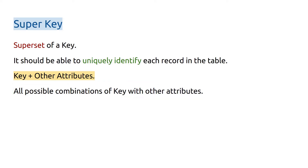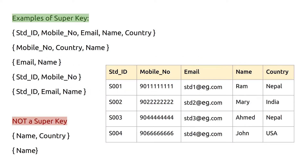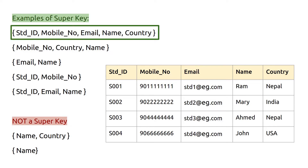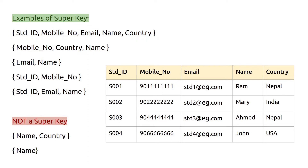For example, in this table, the combination of student ID, mobile number, email, name, and country is a super key. Why? Because if student ID can uniquely identify a record, then student ID plus those other attributes — mobile number, email, name, and country — can also identify a record uniquely. Similarly, mobile number plus country plus name is also a super key.